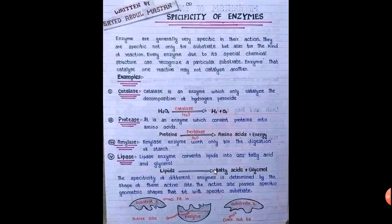Enzymes are specific for particular reactions. Catalase is a specific enzyme used for breaking down hydrogen peroxide to hydrogen gas and oxygen. Protease is specific for protein reactions and is used to break down proteins into their constituent amino acids. Amylase is a specific enzyme for the breakdown of starch. Lipase is specific for breaking down lipids into fatty acids and glycerides.